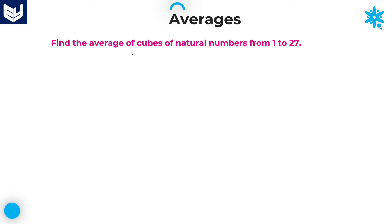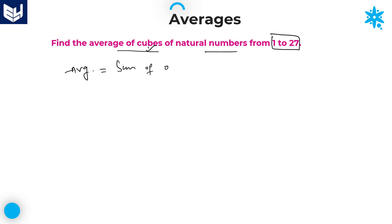See here — find the average of cubes of natural numbers from 1 to 27. In the previous problem we discussed squares; now in this problem we will discuss cubes. Average is equal to sum of observations divided by number of observations.